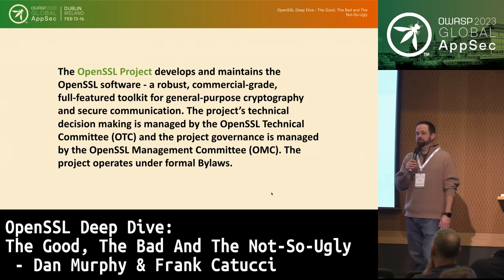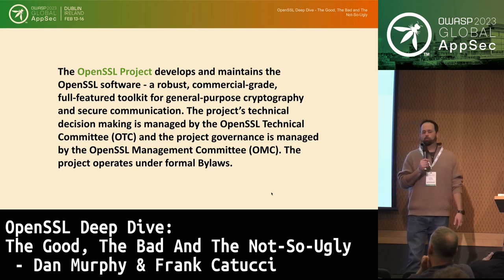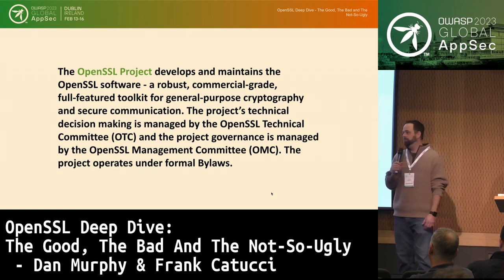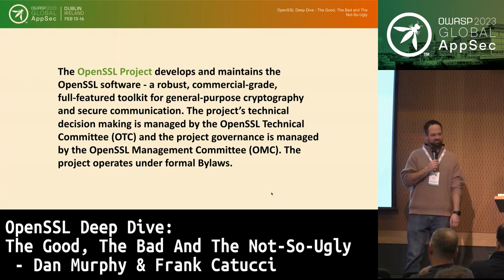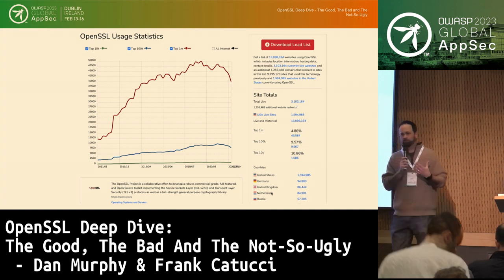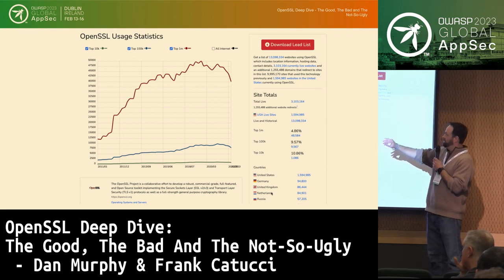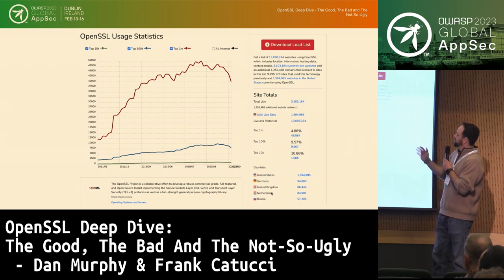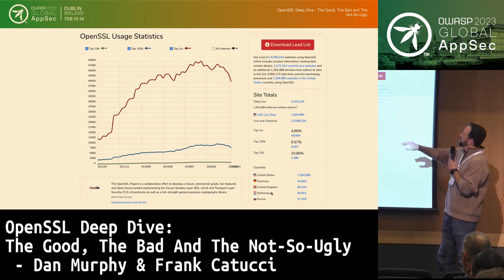Some of the beginning slides will be very high level, then we'll dig deeper. The OpenSSL project develops and maintains open-source software - a full-featured toolkit used for general-purpose crypto, but most importantly utilized in secure communications. Looking at the adoption rate from 2011 to 2020, you can see OpenSSL usage increasing dramatically. We have a little dip with newer ciphers becoming available, but for the most part there's a drastic rise in adoption across the US and the internet as a whole.